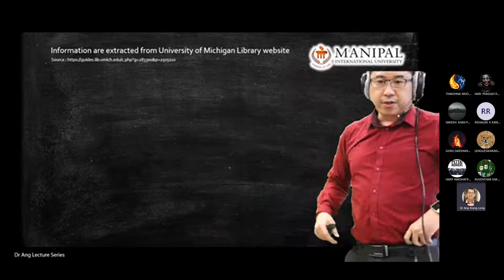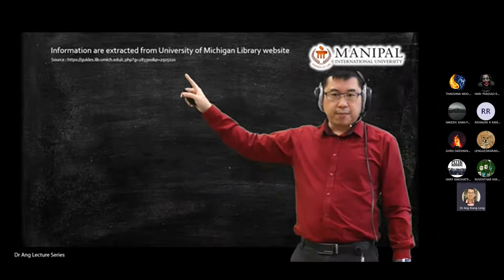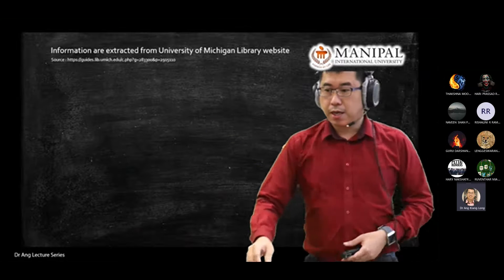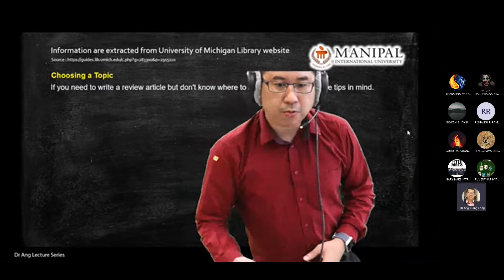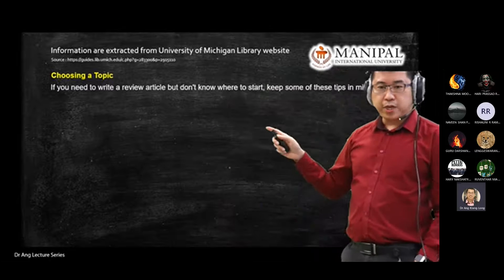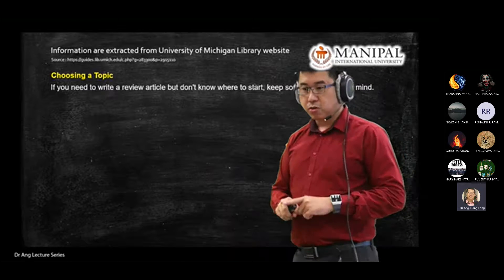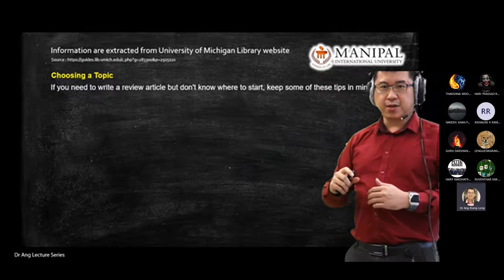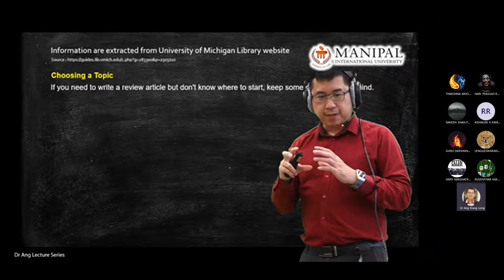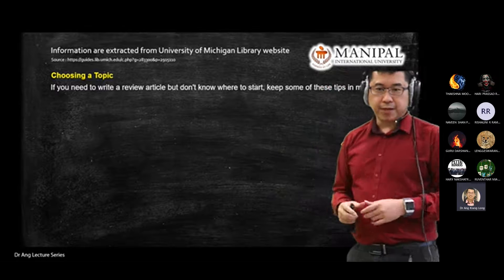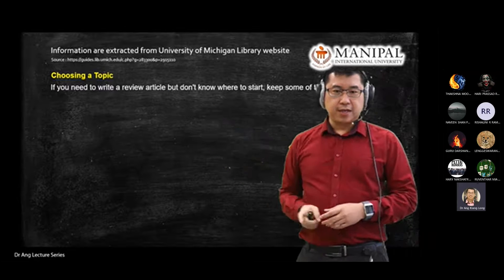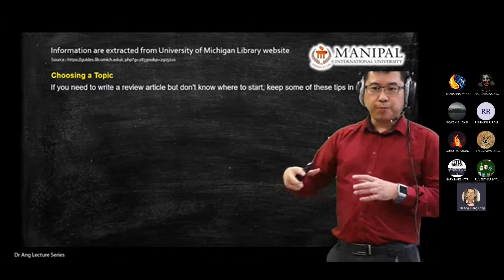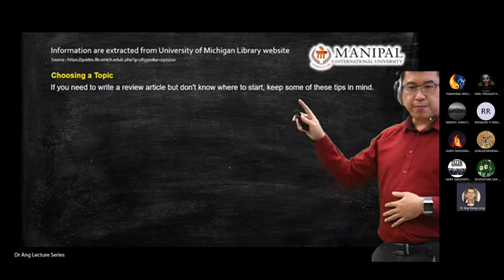The information on the slides today is extracted from a University of Michigan library website, basically to help you prepare your report or homework. Your homework today is — since you're in groups of two — to choose a topic to start practicing the literature review, to find information about that topic. Next week we'll learn how to do documentation for the topic.